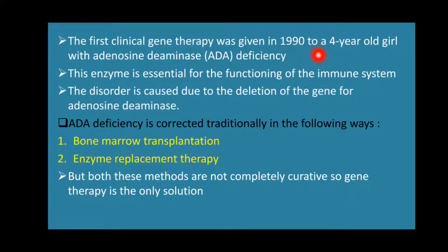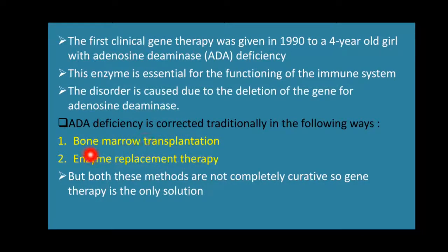ADA deficiency was traditionally corrected by bone marrow transplantation or enzyme replacement therapy, but both these methods are not completely curative. Gene therapy is the only fully effective solution because, unlike traditional techniques, it directly adds the deleted gene of interest to fully overcome the deficiency.